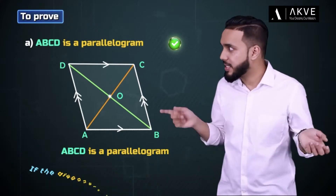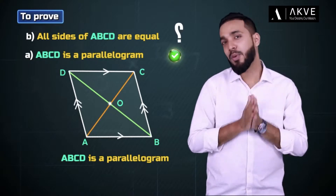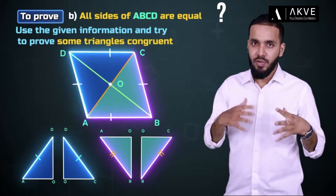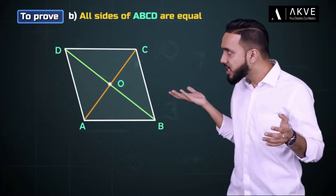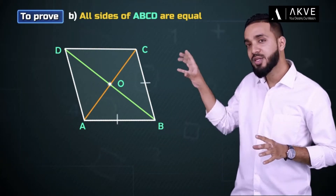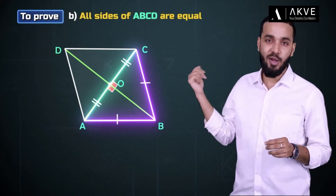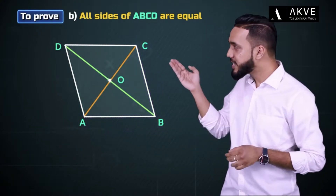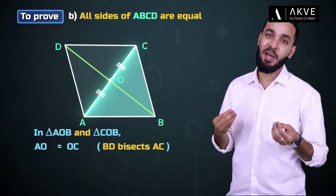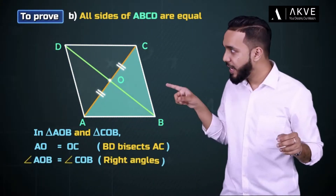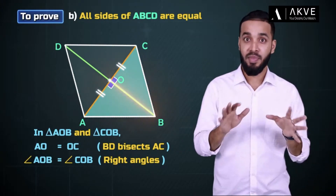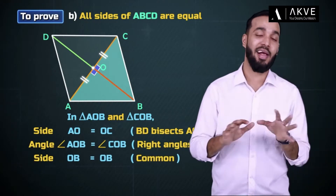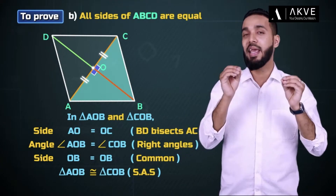For the second part, to show that the sides are equal, we use the given information and try to prove some triangles congruent, then show that their corresponding sides are equal. In triangles AOB and COB: AO = OC because BD bisects AC; angle AOB = angle COB because each is a right angle; and OB = OB because it's common. By SAS, triangles AOB and COB are congruent, so AB = CB as corresponding parts of congruent triangles.